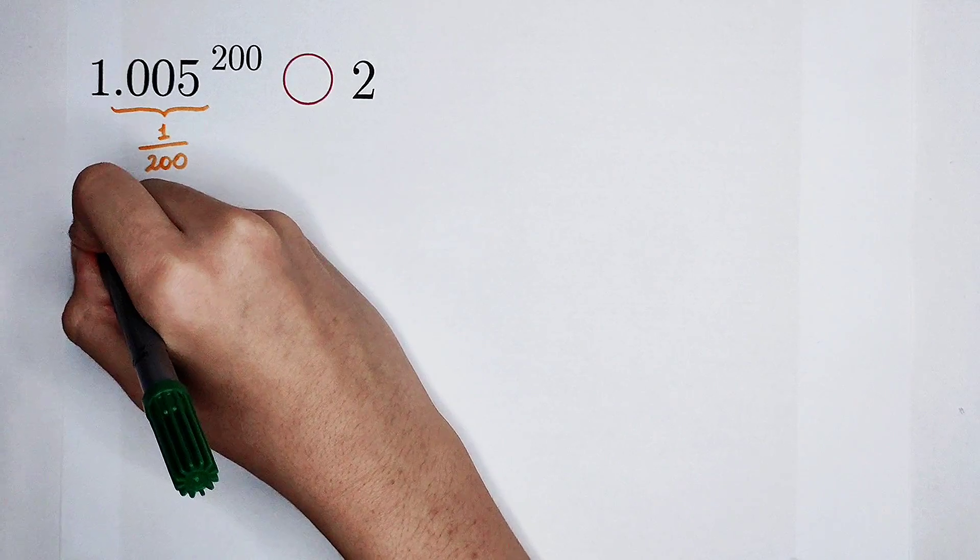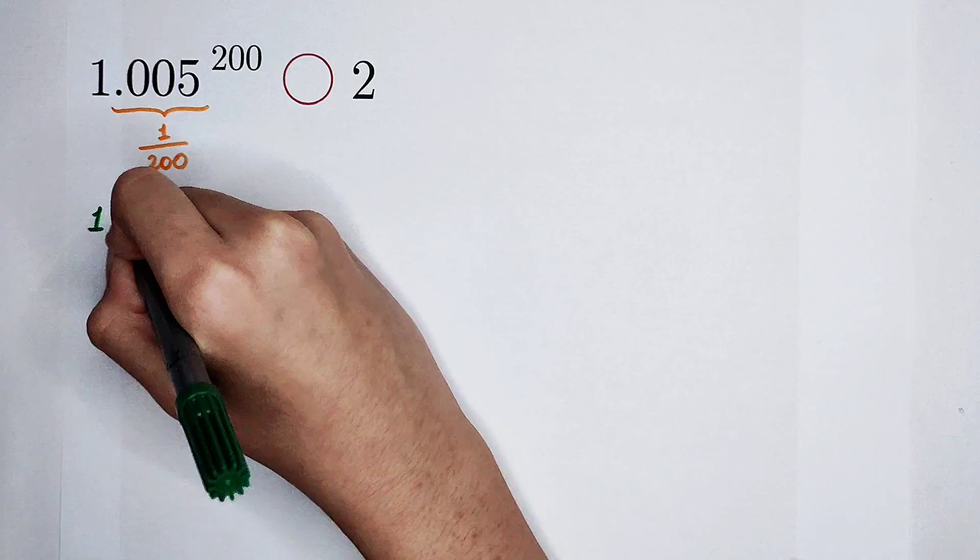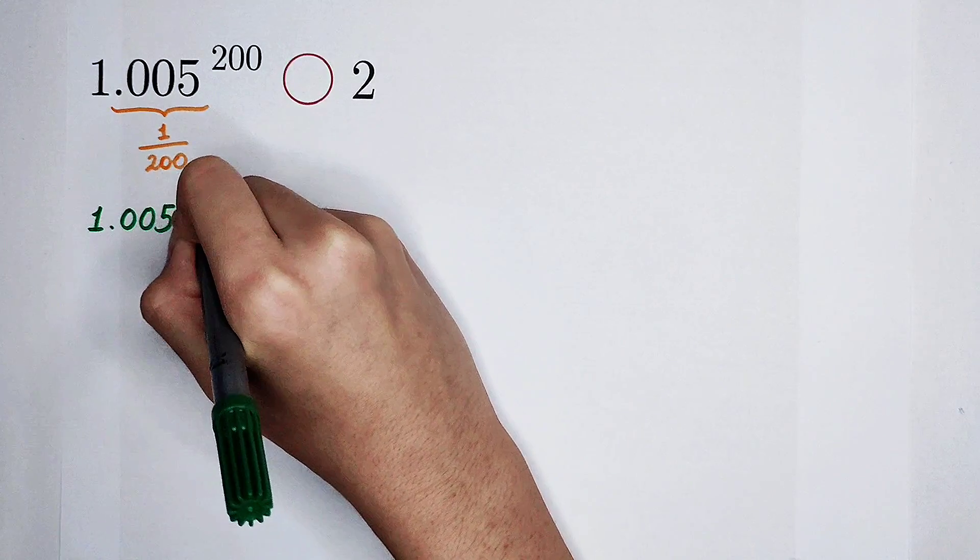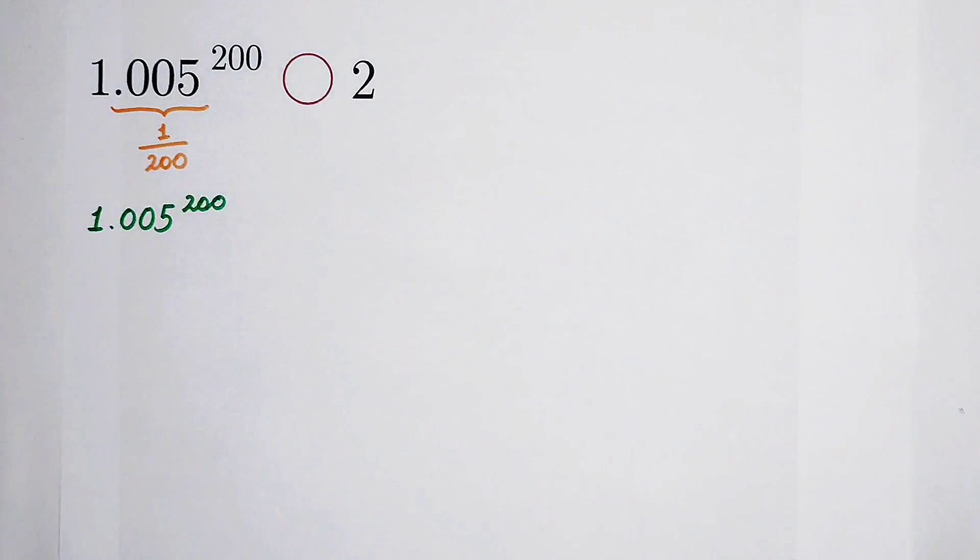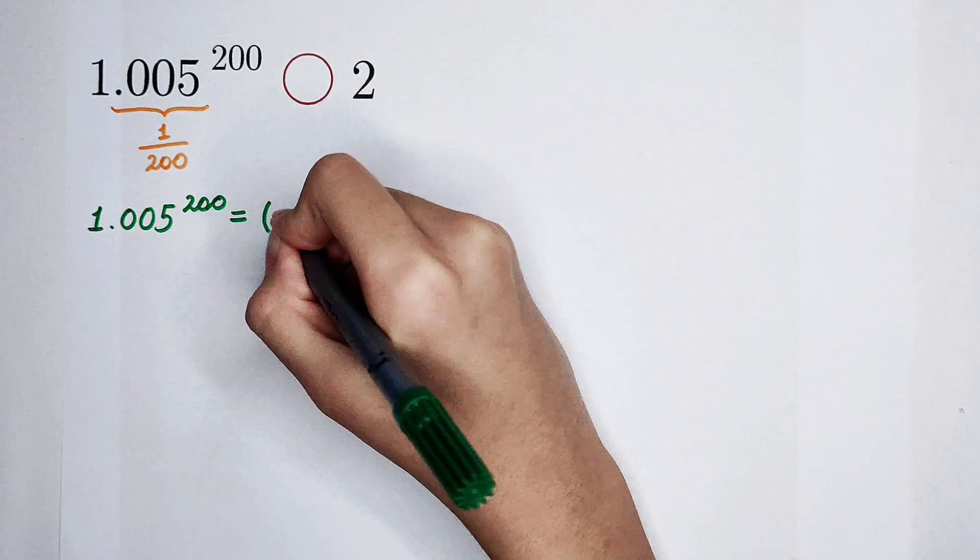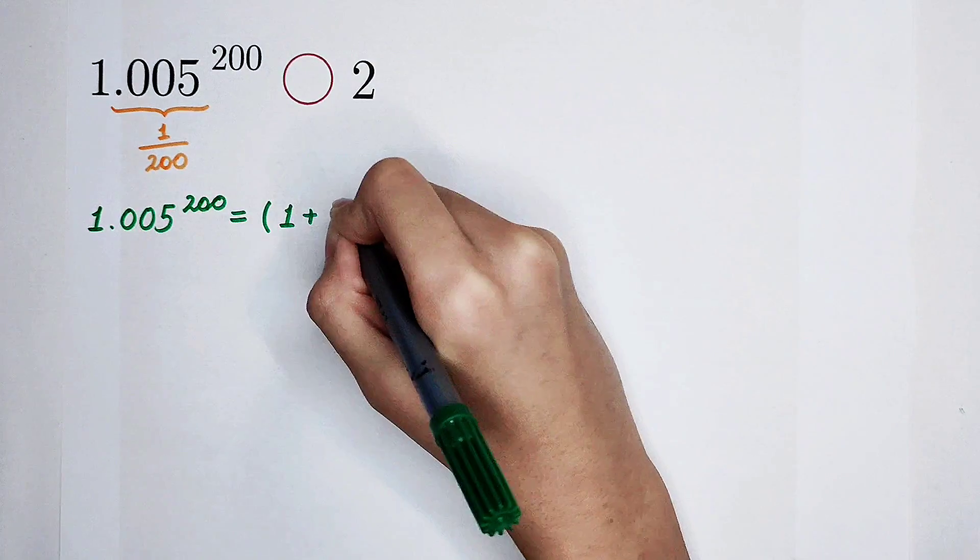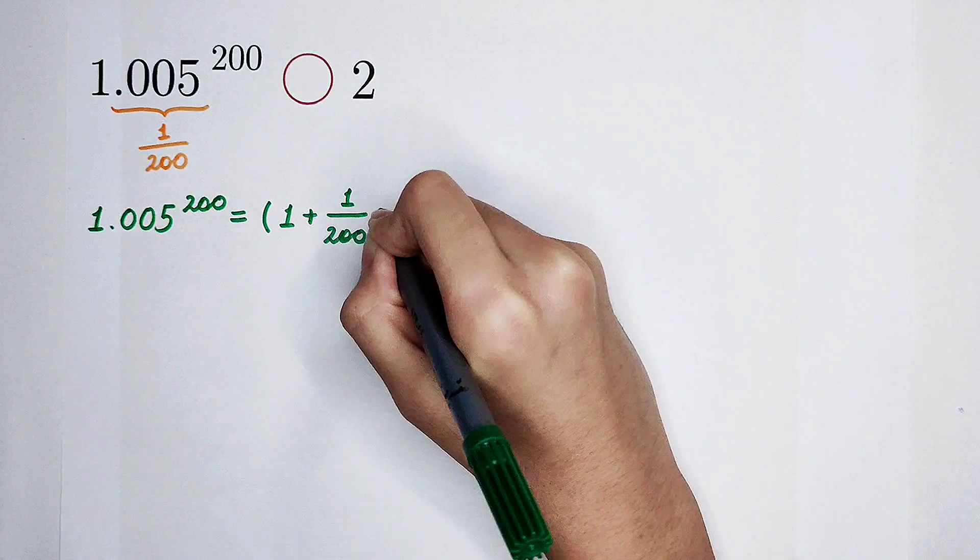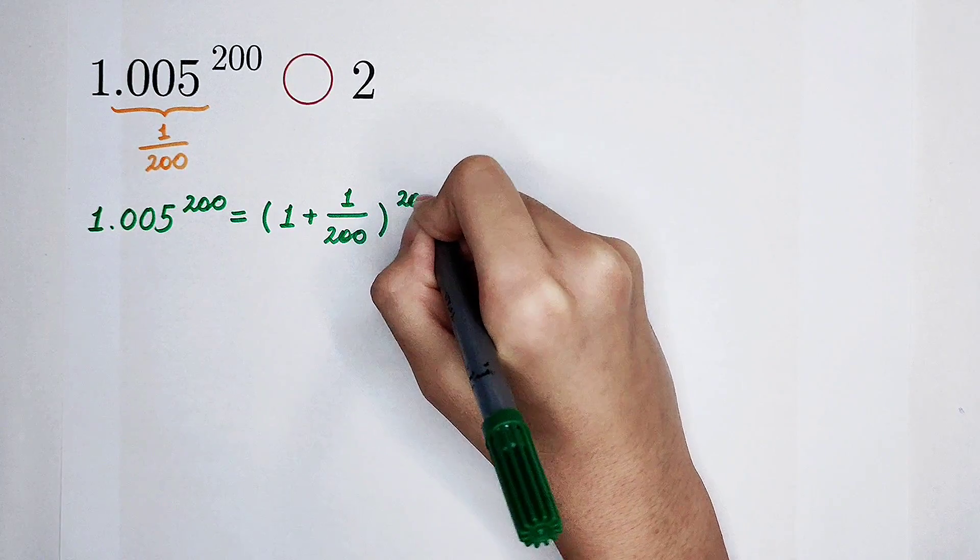So now, 1.005 to the power of 200 is equal to, or it can be regarded as, 1 plus 1 over 200, to the power of 200.